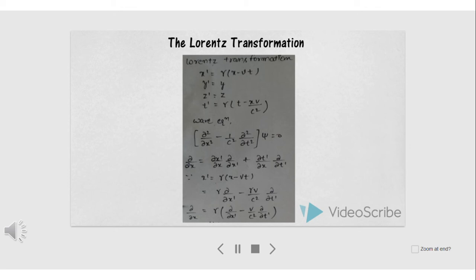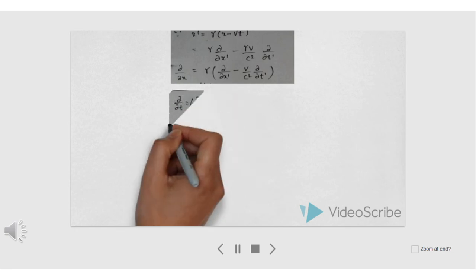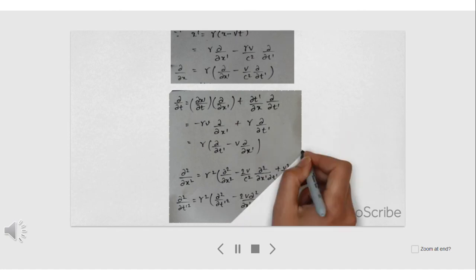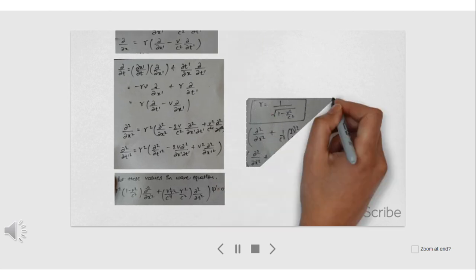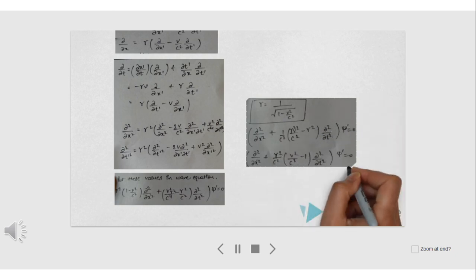The wave equation is ∂²ψ/∂x² - (1/c²)∂²ψ/∂t² = 0. To change the reference frame, ∂²/∂x² and ∂²/∂t² must be written in terms of ∂²/∂x'² and ∂²/∂t'², and ψ changes to ψ'. To do that, we use the eigenfunction-eigenvalue relation: ∂/∂x = (∂x'/∂x)(∂/∂x') + (∂t'/∂x)(∂/∂t'). Since x' = γ(x - vt), its partial derivative with respect to x gives γ. Since t' = γ(t - xv/c²), its partial derivative with respect to x gives -γv/c². Therefore ∂/∂x = γ(∂/∂x' - (v/c²)∂/∂t'). Using the same approach, ∂/∂t = γ(∂/∂t' - v∂/∂x').